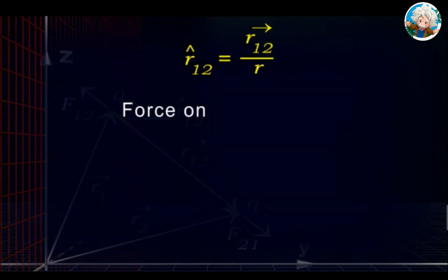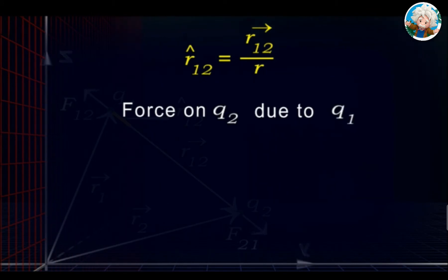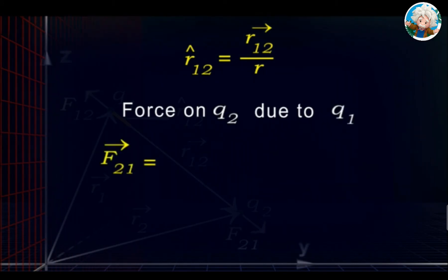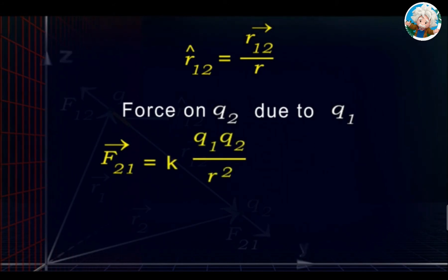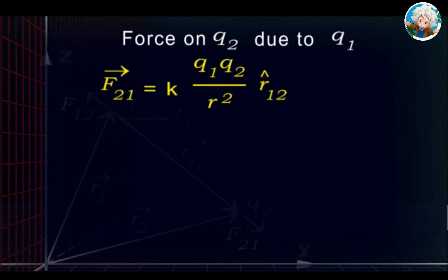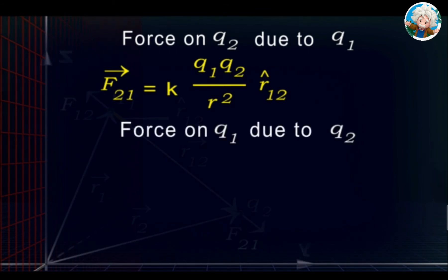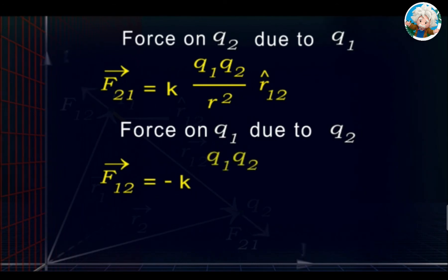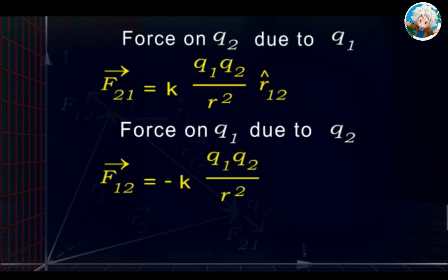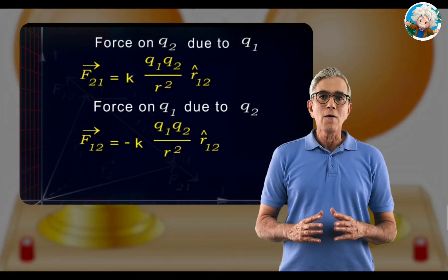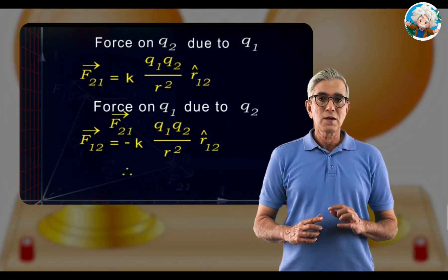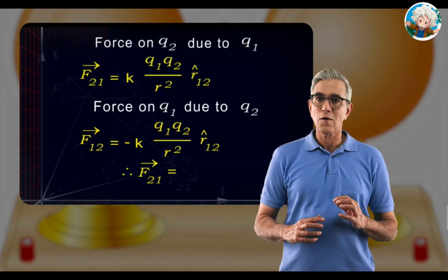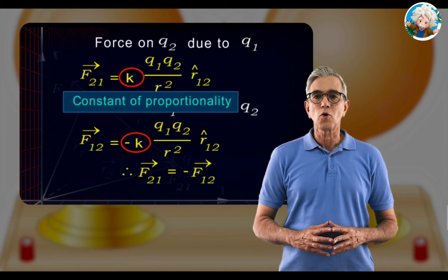The force on q2 due to q1, vector F₂₁, is equal to k·q1·q2 upon r² into r̂₁₂. The force on q1 due to q2, vector F₁₂, is equal to minus k·q1·q2 upon r² into r̂₁₂. Therefore, vector F₂₁ is equal to minus vector F₁₂, where k is the constant of proportionality.